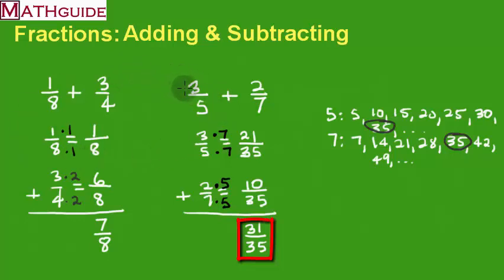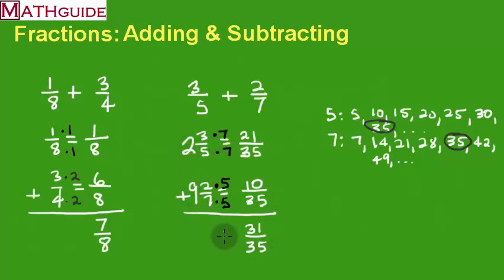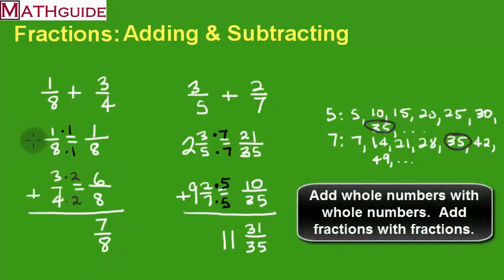There are also problems with whole numbers. For instance, if it was 2 and 3 fifths plus 9 and 2 sevenths, the problem would be done exactly the same way — get common denominators, add the numerators just like before, and also add the whole numbers: 9 plus 2 is 11. So your answer is 11 and 31 thirty-fifths. Similarly, if this was 3 and 1 eighth inches plus 2 and 3 fourths inches, you'd still add the fractions the same way. 3 plus 2 is 5, so your answer would be 5 and 7 eighths inches.